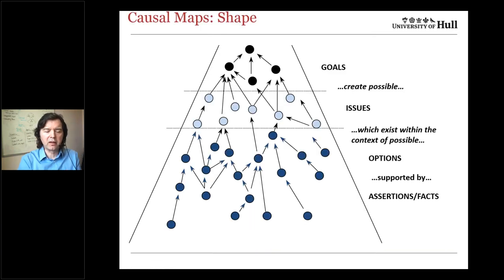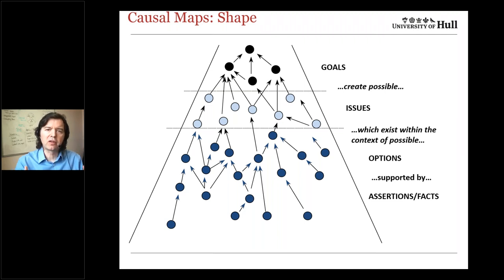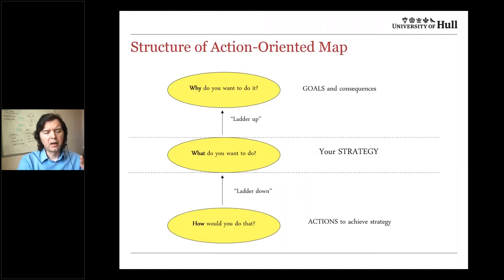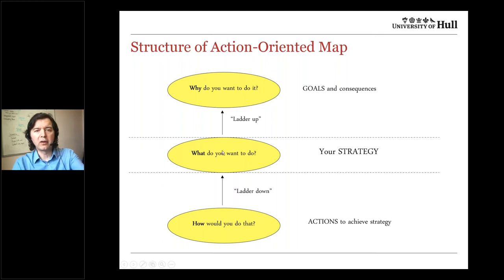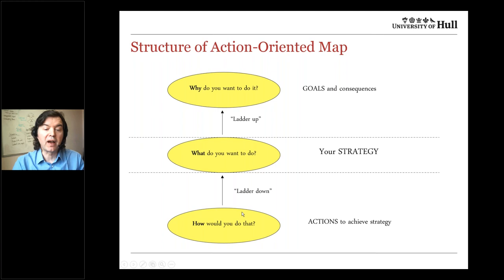The idea is that you end up with goals surfacing at the top of the map, helping people understand how they see the situation and the implicit long-term strategic goals they have. You can also deliberately create an action-oriented map where you put what you want to do in the centre, then ladder up asking why you want to do that and what the consequences would be, and ladder down for the actions needed to achieve it. That's a very good way of doing action plans.